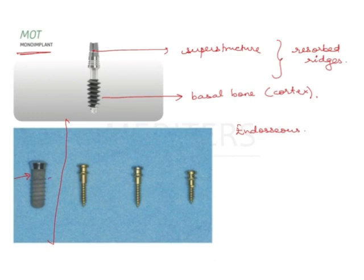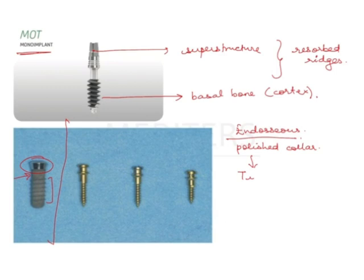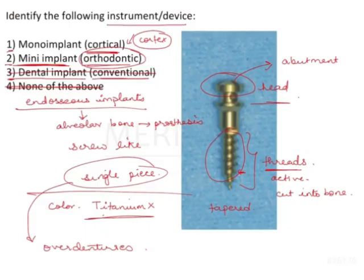In the second image, the first implant shown is an endosseous implant — titanium-based with threads that are not very active, because very active threads would cause trauma and micro fractures in the bone. It has a polished collar on top — this one specifically, not all of them. This image shows a tissue-level endosseous implant, which is not similar to what is given in the question.